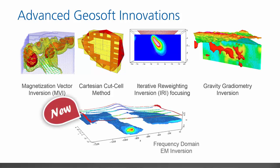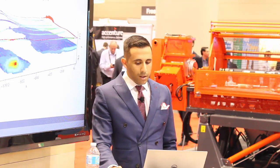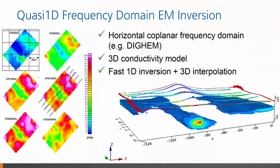Newly added to Voxi, you can now create 3D conductivity models of frequency domain EM data. This first version of Voxi EM supports horizontal coplanar frequency domain EM data, such as that acquired by DIGIM or similar surveys. Voxi EM creates 3D conductivity models from fast 1D inversion and 3D interpolation, and conductivity modeling is added to the already existing gravity and magnetic modeling capabilities of Voxi. The benefit of the quasi-1D method is an intuitive model that can be easily integrated, compared, and constrained with other 3D information, with the proven speed and effectiveness of a 1D inversion.